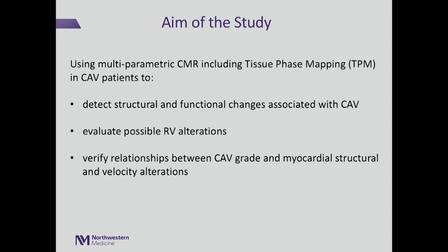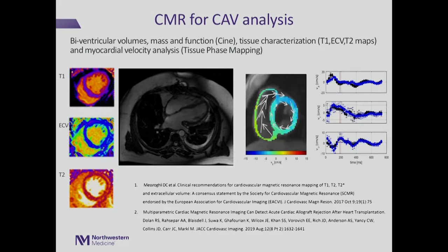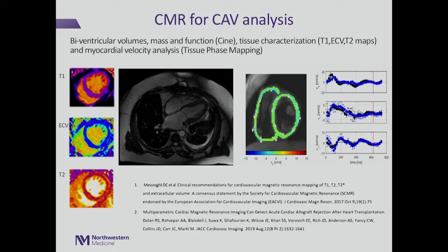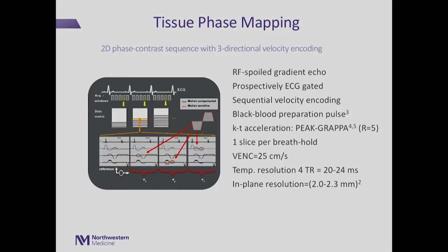To accomplish this, we used structural analysis with T1 and T2 mapping and CINE analysis, along with tissue phase mapping to quantify myocardial velocity three-directionally in all patients. Tissue phase mapping is a 2D phase contrast sequence with three-directional velocity encoding based on a spoiled gradient echo sequence, ECG prospectively gated, using a velocity encoding of 25 centimeters per second.